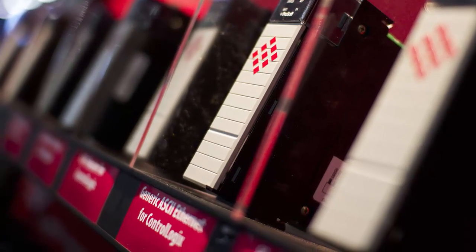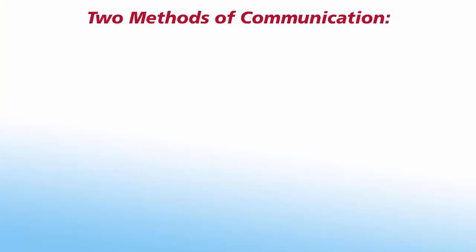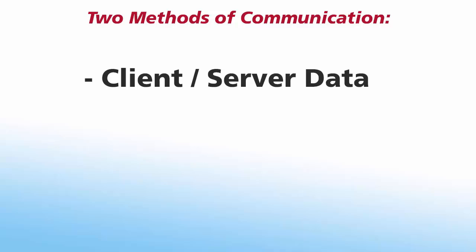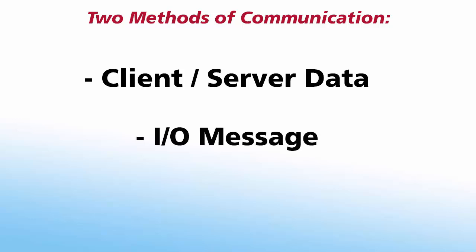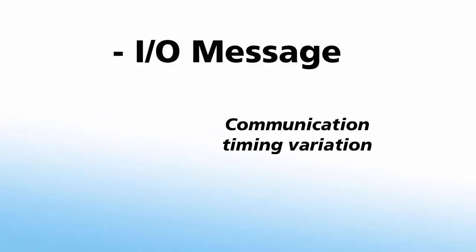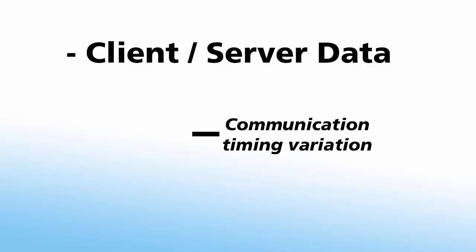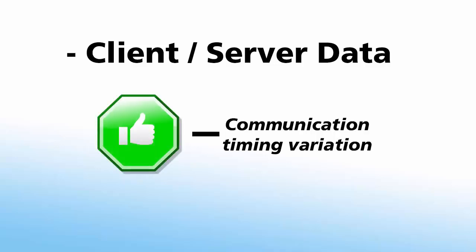We'll begin by defining what the different methods are. Most industrial automation protocols have two methods of communication: client-server data communications and input-output message communications. Each of these methods has its own properties and characteristics that make them suitable for different applications. Both are used to read and write data between devices. I/O messaging is used when communication timing variations are not acceptable, while client-server data communications are used when some variation in communications is tolerable.